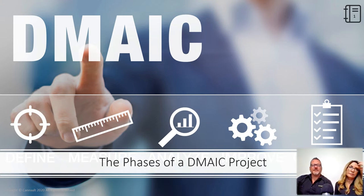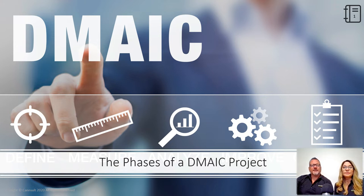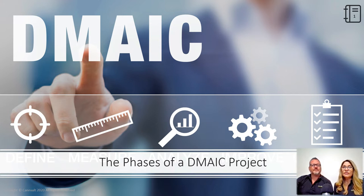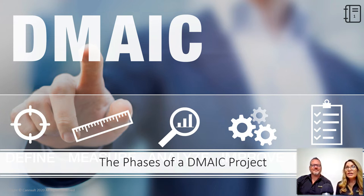DMAIC is an acronym that stands for the phases of a root cause analysis improvement project. The phases are Define, Measure, Analyze, Improve, and Control. In this section of the training, we'll dive into each phase and share with you the purpose and main milestones of each. Let's go through the phases of DMAIC, getting to the heart of an improvement project.